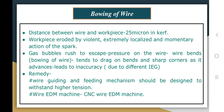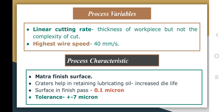Most of the process variables that control Wire EDM are common with EDM die sinking as well. The linear cutting rate in Wire EDM is dependent on the thickness of the workpiece but not on the complexity of the cut, and the wire speed may be as high as 40 mm per second. This process produces accurate matte finishes with thousands of tiny craters on the machined surface, which helps in retaining lubricating oil and results in consistent die life.